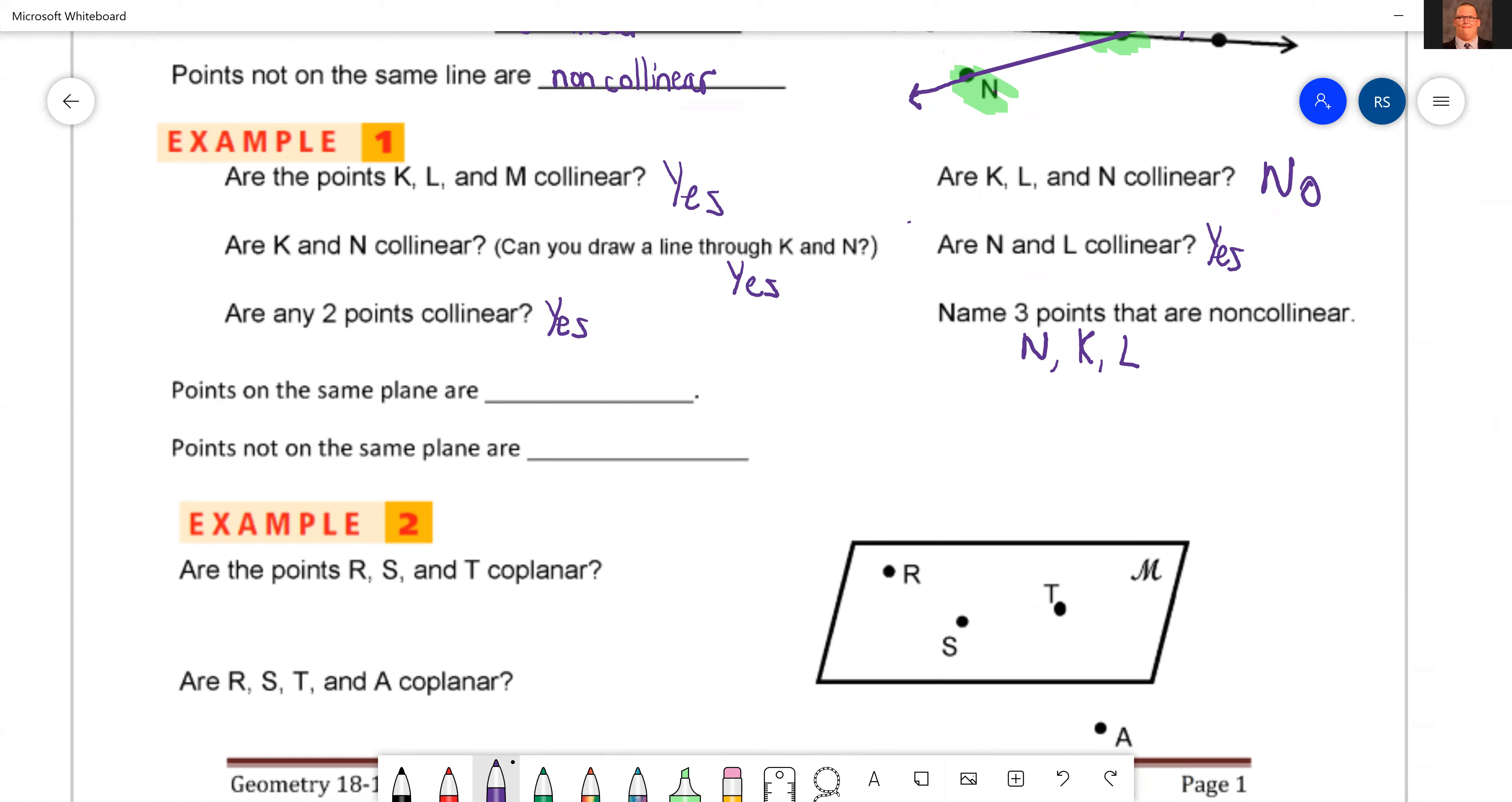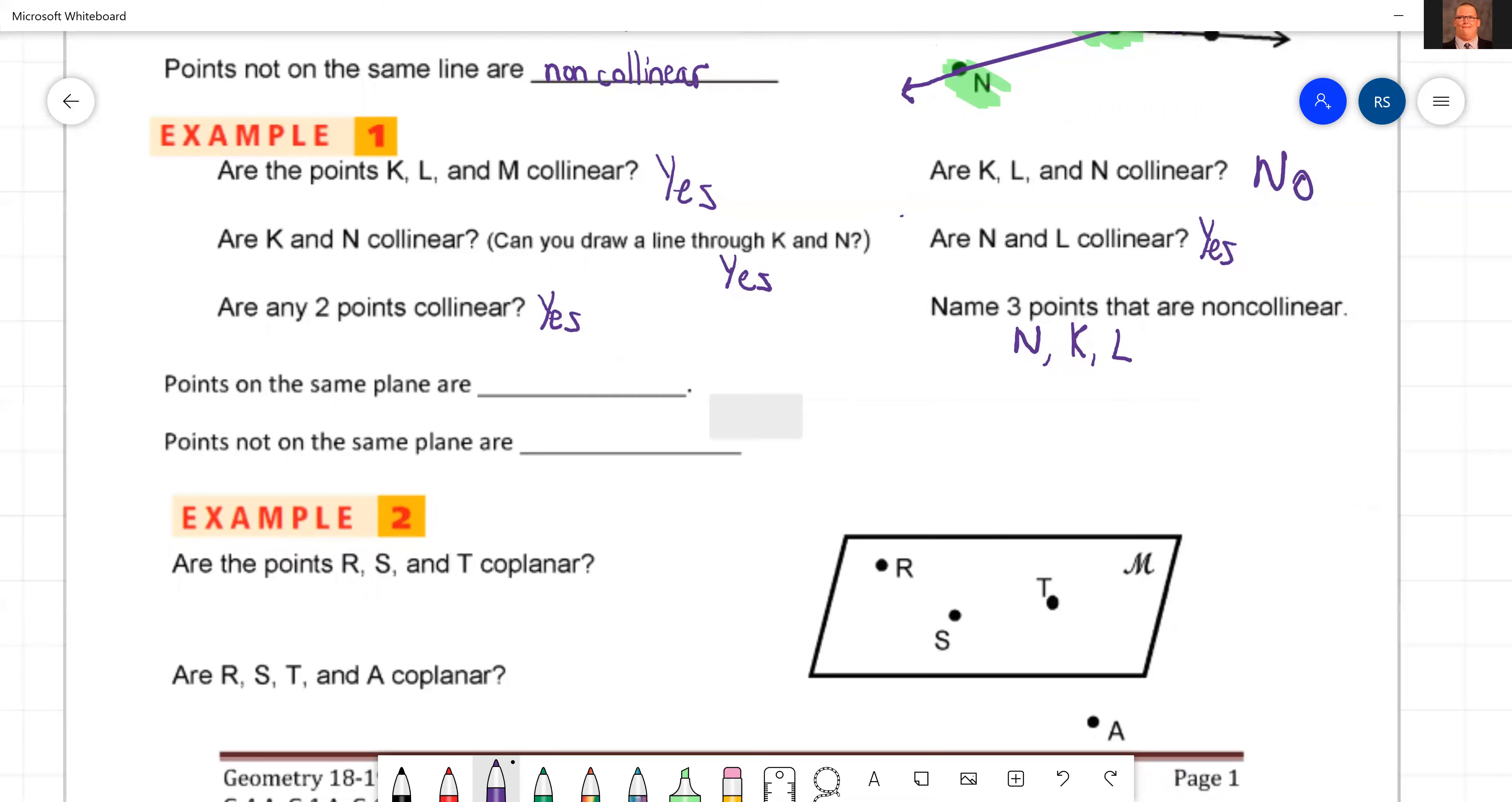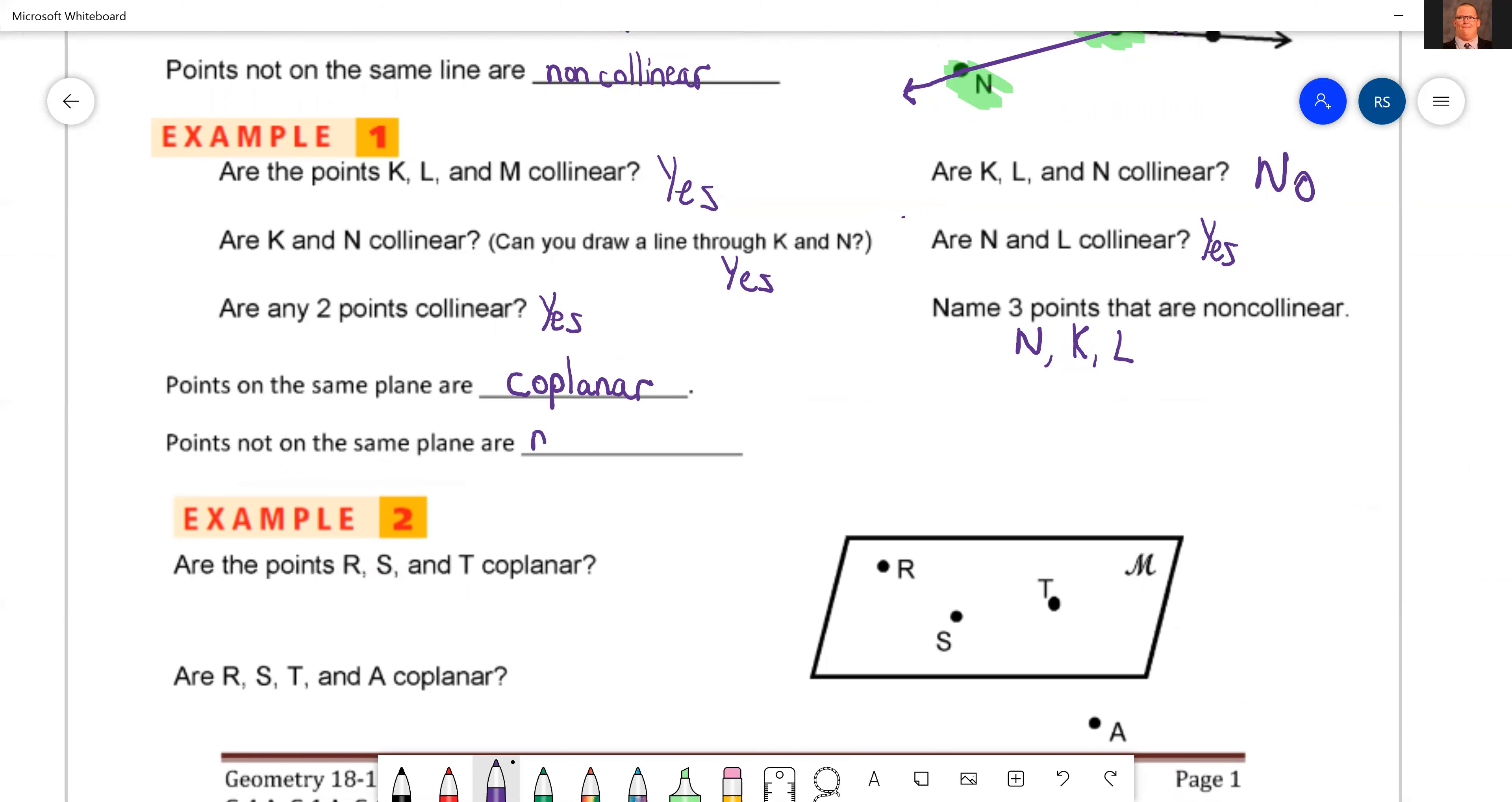Okay, so now we're going to look at coplanar. Points on the same plane are, they're on the same plane, so we're going to say they are coplanar.